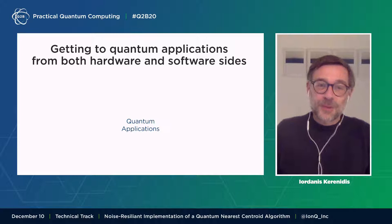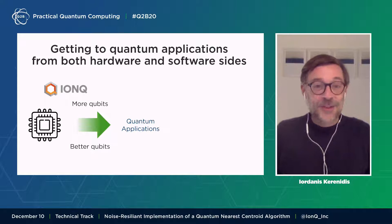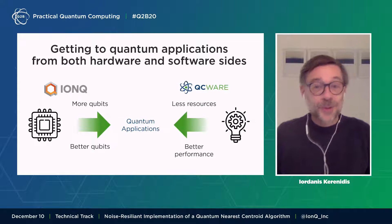I will be giving the first part of the talk. What we want to do in quantum computing is find real world applications. To do that, we have to work on both sides, both from the hardware and from the software. For example, IonQ is giving us better hardware with more qubits and better qubits. What we do on our side is try to get these algorithms that we know can provide speedups and advantages and find ways to implement them with less resources while keeping better performance.